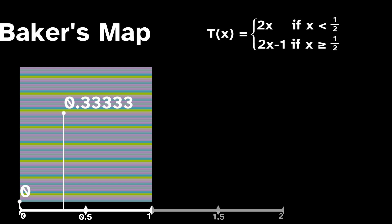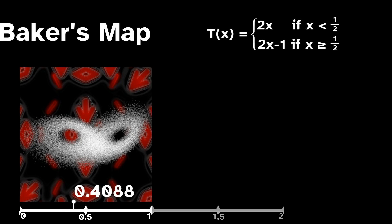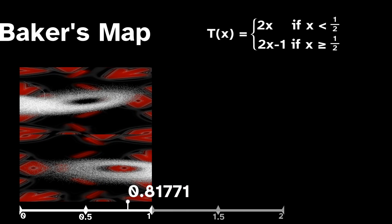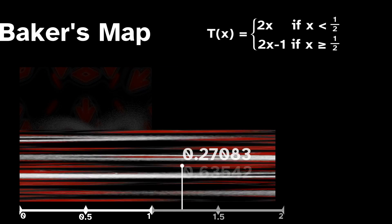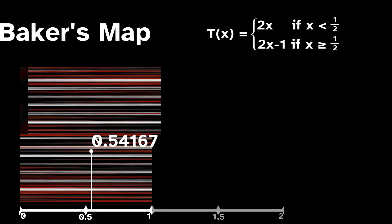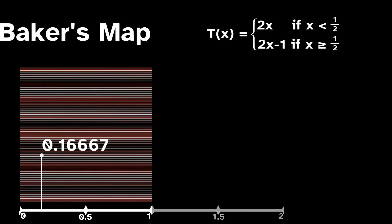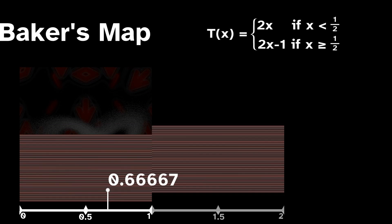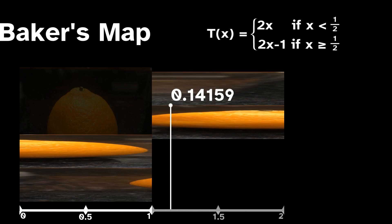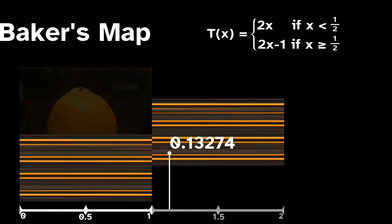In this case, 1 third has a period of 2. A point with a period of 1 is a fixed point. This point bounces around a bit before hitting 1 third, where it then iterates between 1 third and 2 thirds forever. A point that eventually iterates to a periodic point is called pre-periodic. And the point pi over 4 seems to bounce around with no pattern at all.